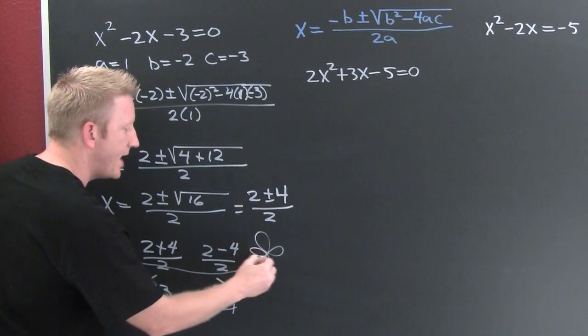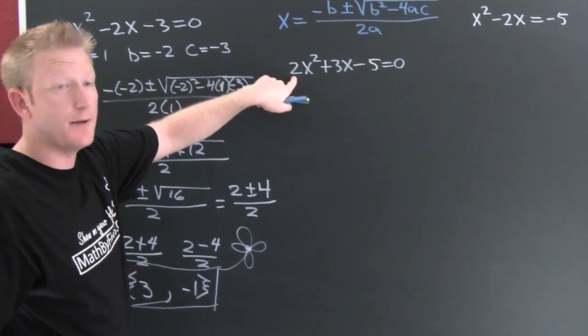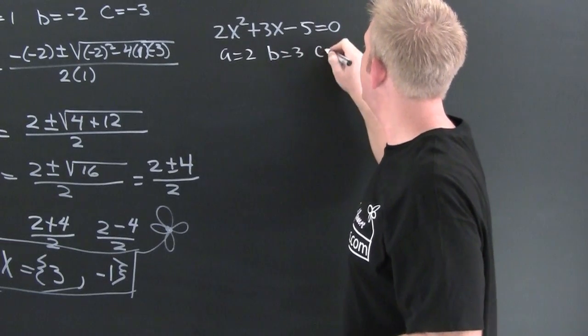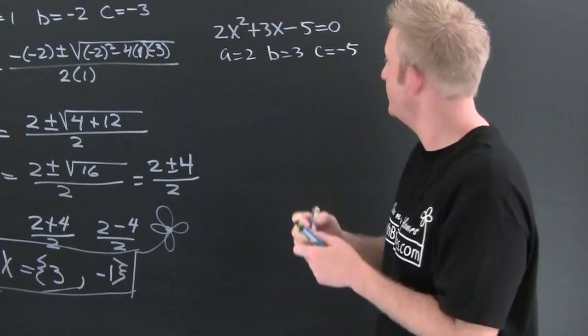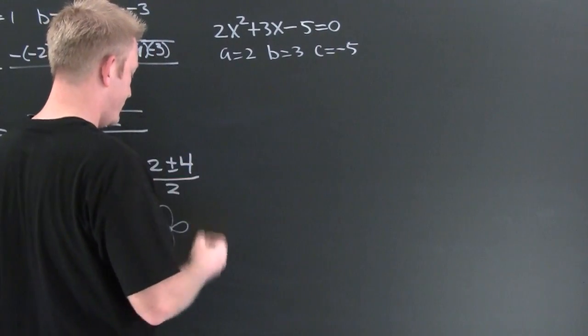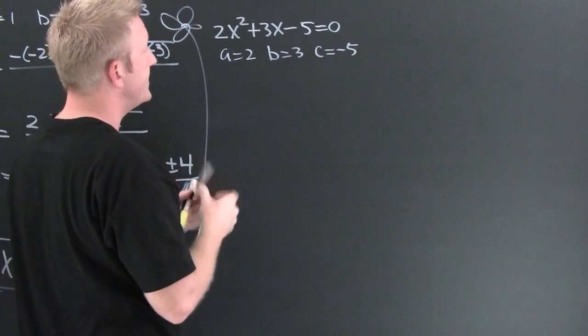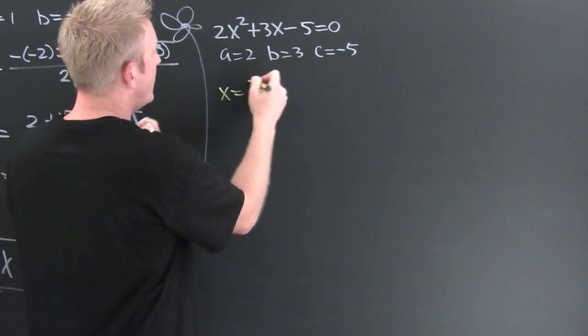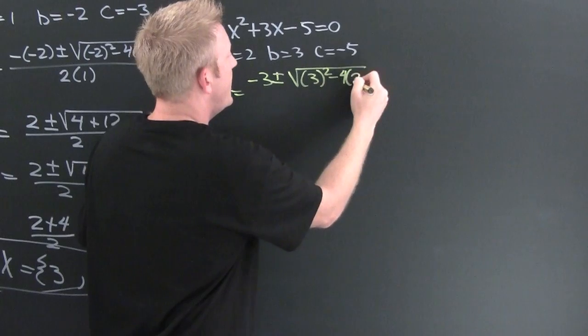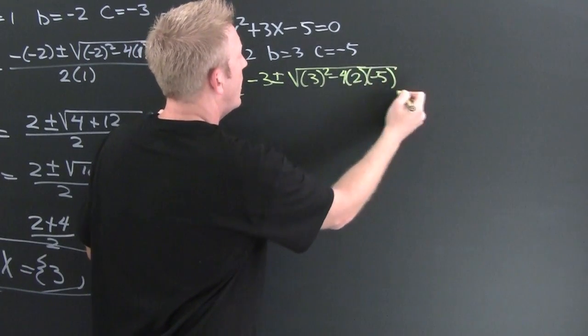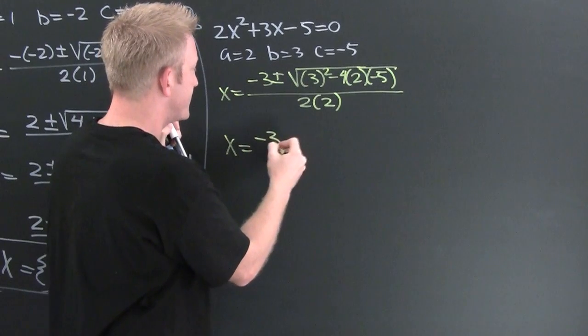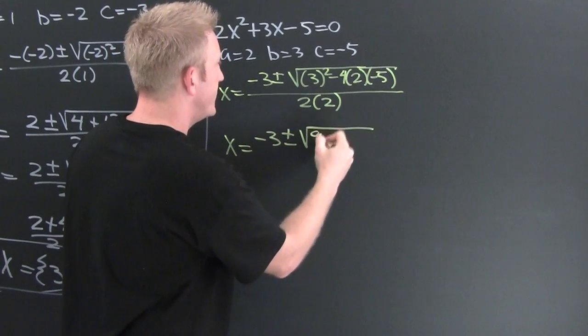Proceeding on to our next example, my a is 2, my b is 3, and my c is minus 5. So then I'm gonna plug it in. This is gonna be x equals minus b plus and minus square root of b squared minus 4ac all over 2a.